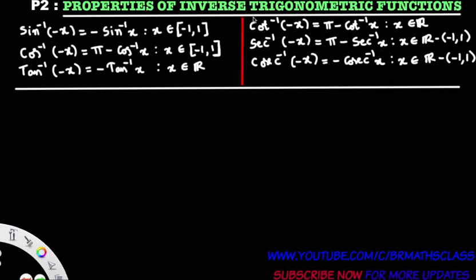Properties of inverse trigonometric functions. In this second property, we are going to prove all these results: sin inverse of minus x equal to minus sin inverse x; cos inverse of minus x equal to pi minus cos inverse x; tan inverse of minus x equal to minus tan inverse x. Similarly, cot inverse of minus x, secant inverse of minus x, cosecant inverse of minus x.